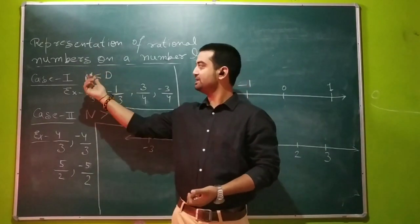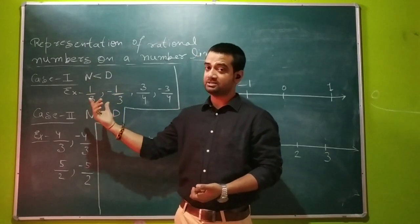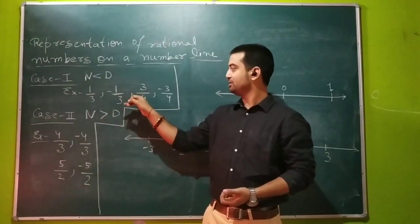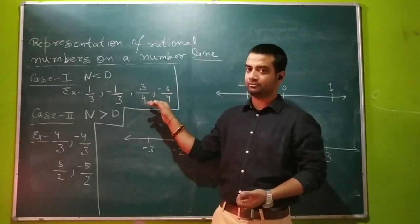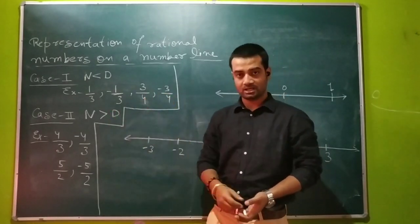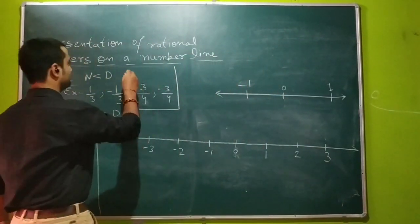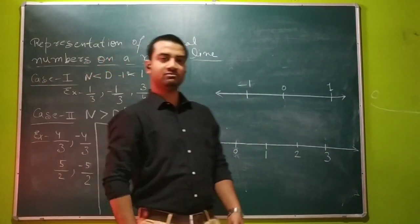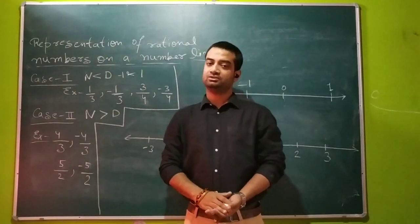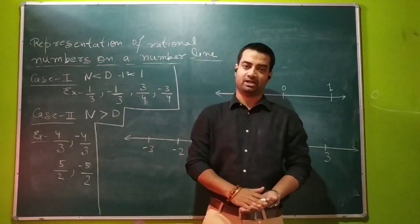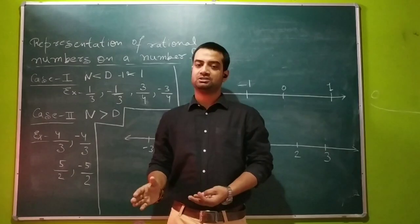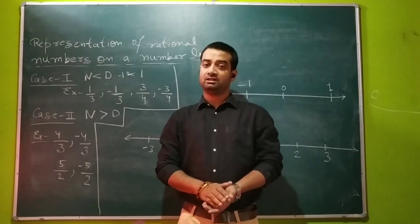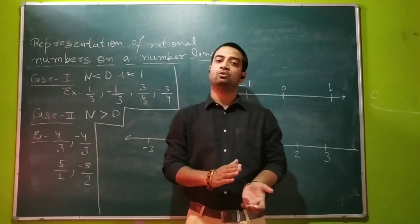If the numerator is less than the denominator — for example, 1 upon 3 and minus 1 upon 3, or 3 by 4 and minus 3 by 4 — these all numbers lie somewhere between minus 1 and 1. If the number is negative, then it will be between 0 and minus 1. If the number is positive and the numerator is still less than the denominator, then the number will lie somewhere between 0 and 1.